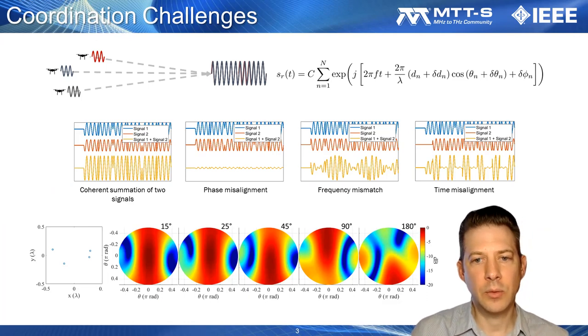Generally, the impacts of improper coordination manifest as a degradation in the coherent signal gain, which can be appreciable over time.